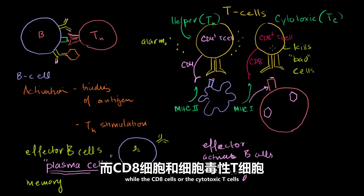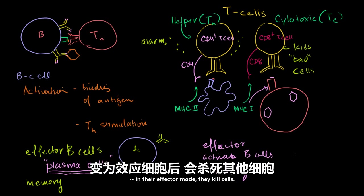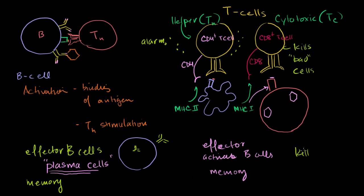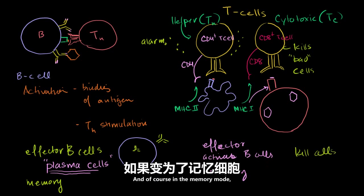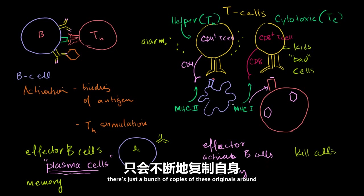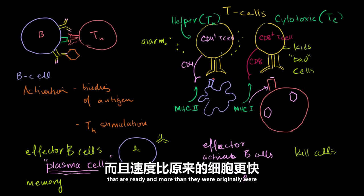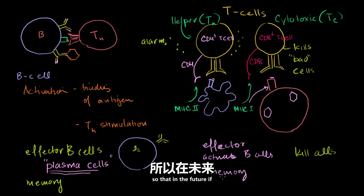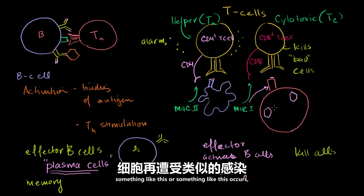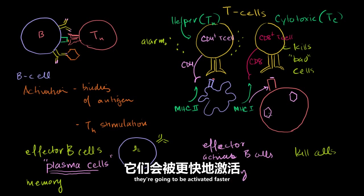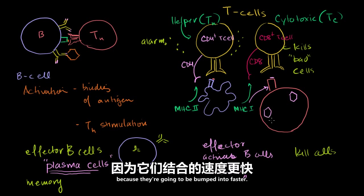While the CD8 cells, or the cytotoxic T cells, in their effector mode, they kill cells. And of course, in the memory mode, there's just a bunch of copies of these originals around that are ready and more than there originally were. So that in the future, if something like this or something like this occurs, they're going to be activated faster, because they're going to be bumped into faster.